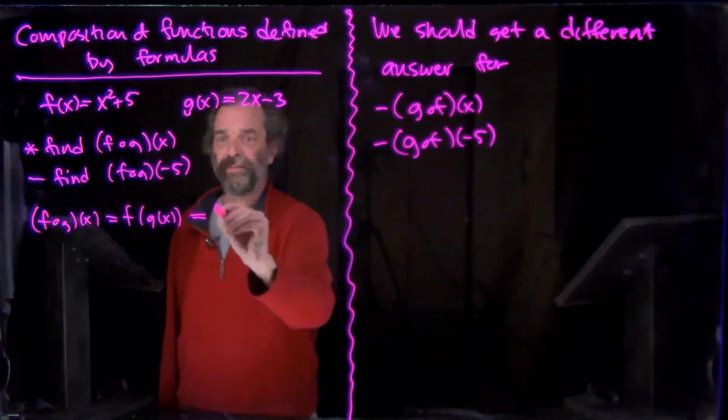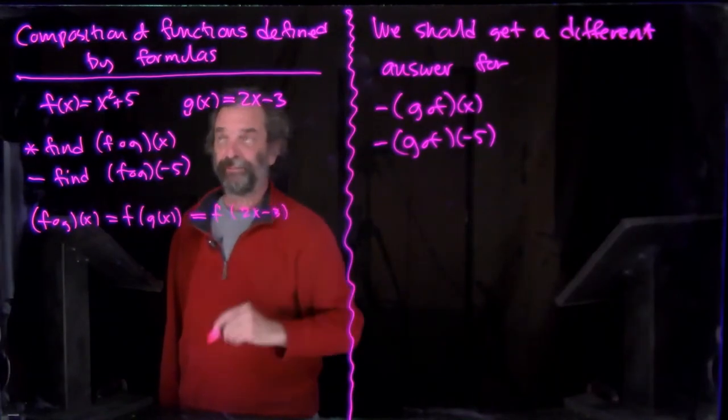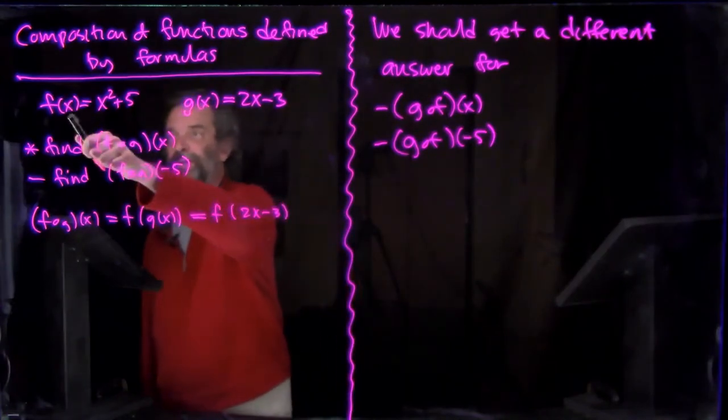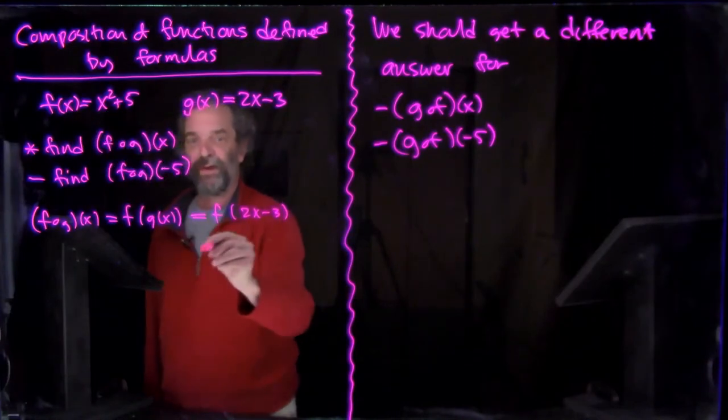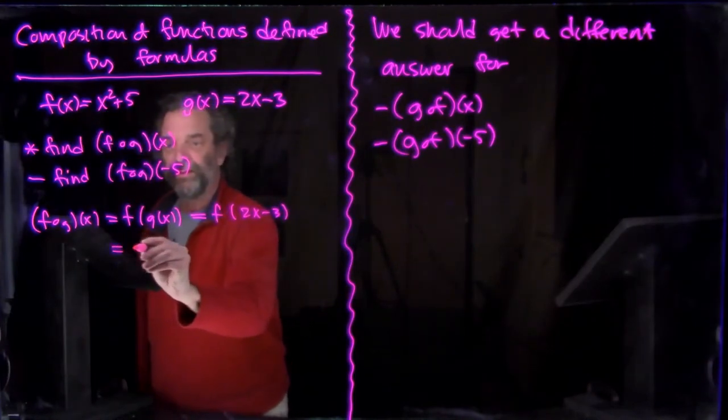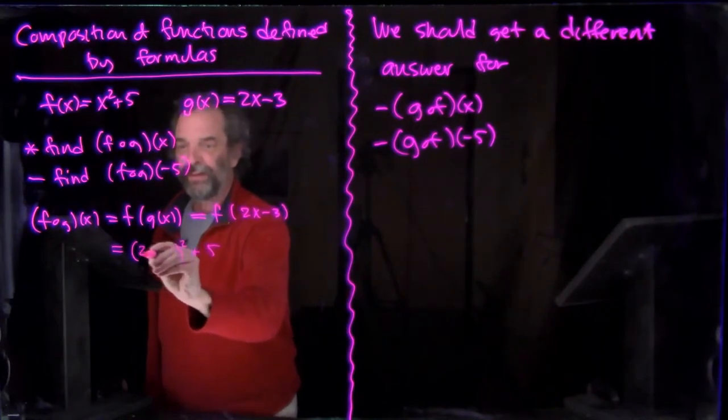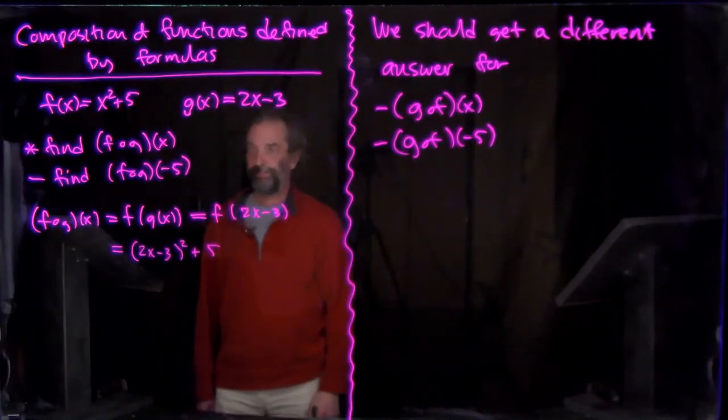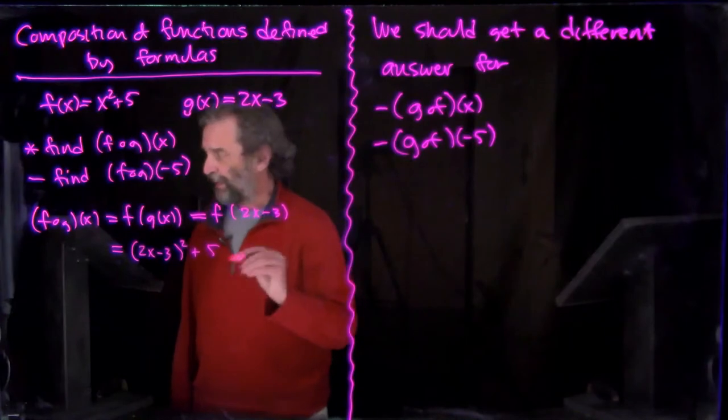So that's f. g is 2x - 3, so I just stick it in there. That's an easy replacement. And then we have to see what f does. f takes x and changes it to x² + 5. So what we'll get here is something squared plus 5. That something is going to be the 2x - 3 that we use as the argument for f, the g(x). And then we're going to have to multiply that out.